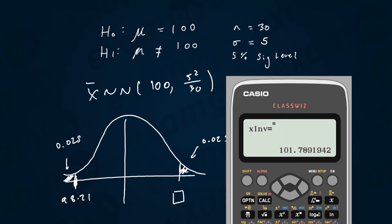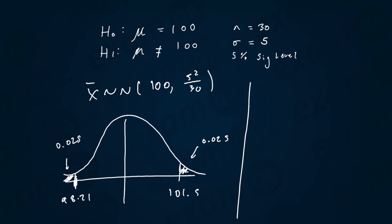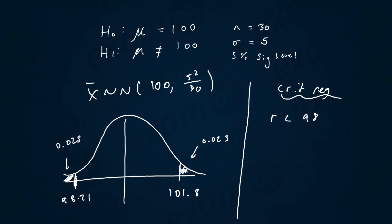And we've got our upper critical region of 101.79, or 101.8 to 4 significant figures. So the critical region is x̄ less than 98.21 and x̄ greater than 101.8. And there we have it.